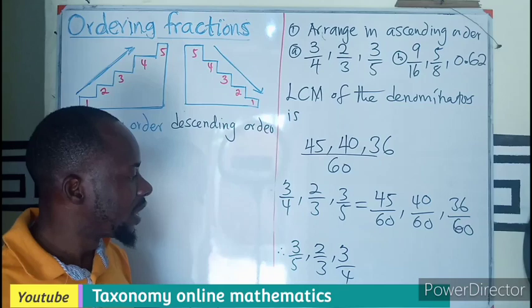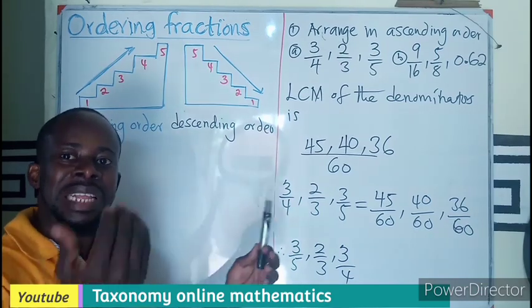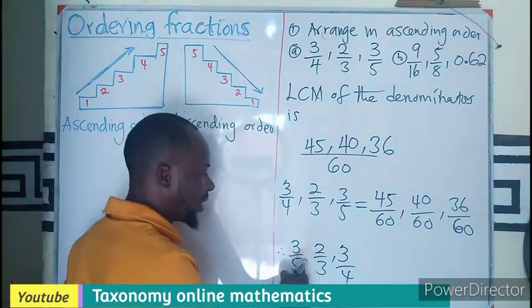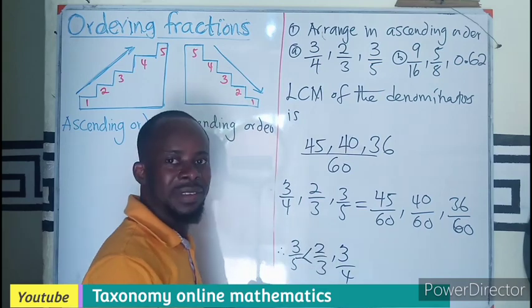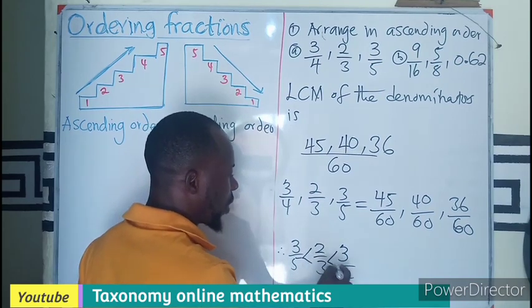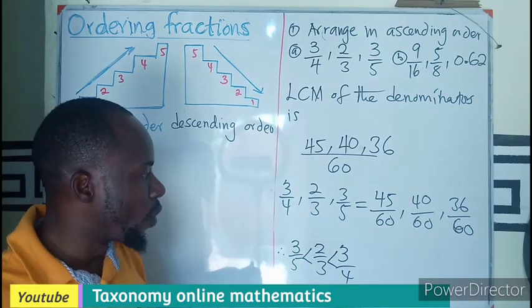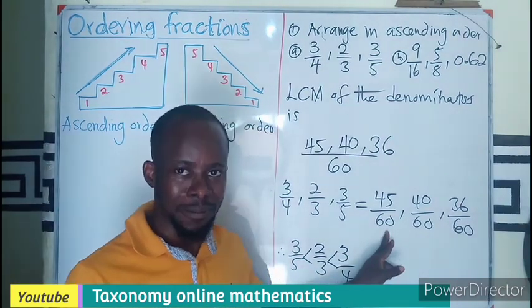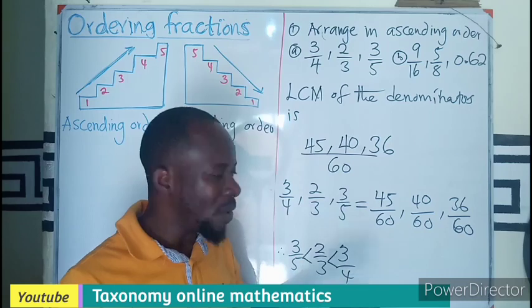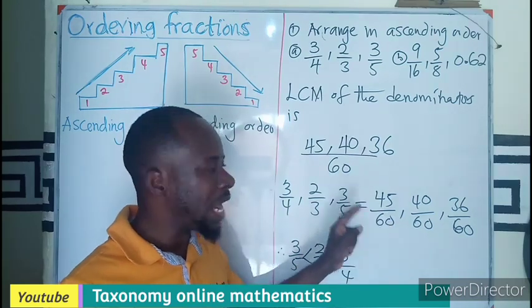If I want to introduce the less than or greater than into it, it could be this is less than this and this is also less than that. Ascending order. I believe you know what the descending order will be. The descending order means from the bigger down toward the smaller one.